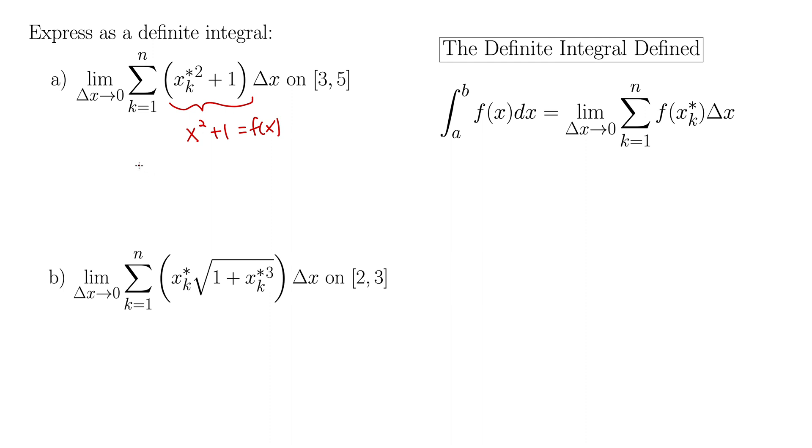Okay so when we go into integral land all of this, this delta x goes to 0, sum business becomes the integral sign which is actually a stretched out s by the way for sum.